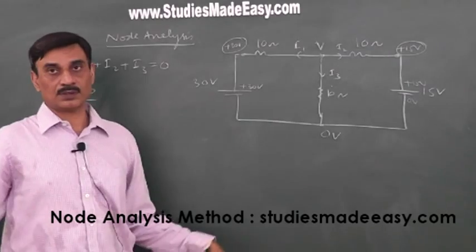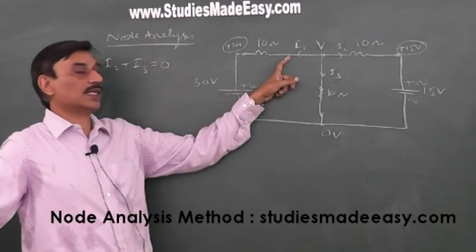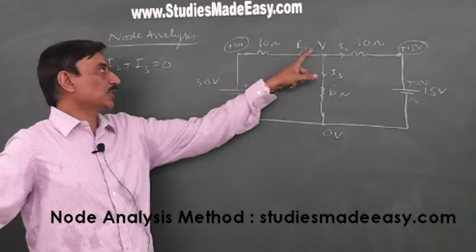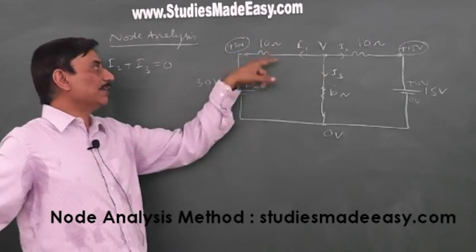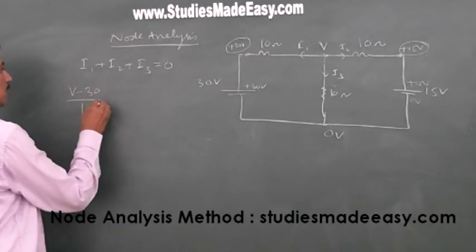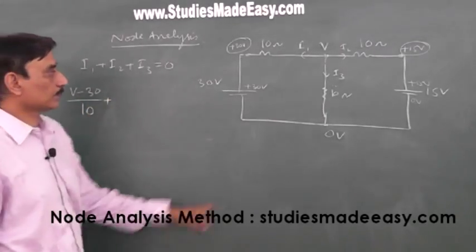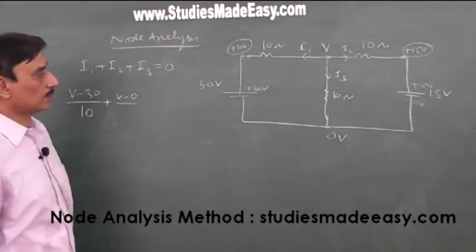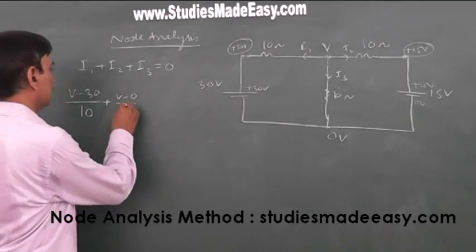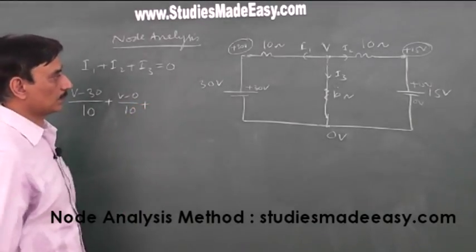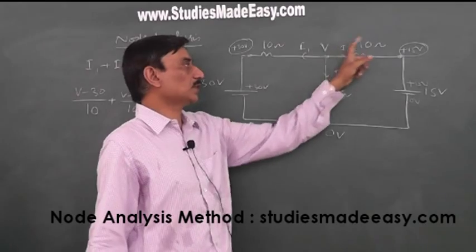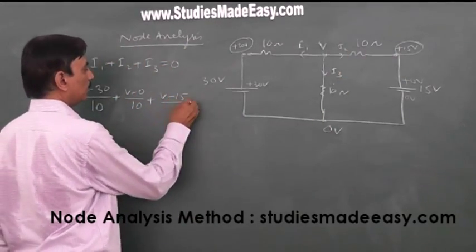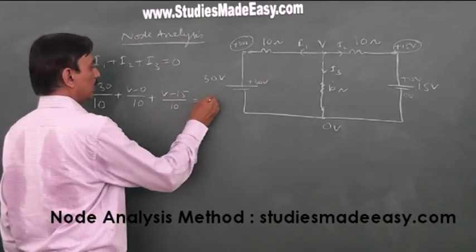Don't write 30 minus V. I have taken the current, conventional current direction like this. So potential of this is more than potential of that. So potential difference is V minus 30 divide by R, 10 plus 30. V minus 0 divided by 10 plus, current is going this way, so potential of this is greater than potential of this. So V minus 15 upon 10, that is equal to 0.